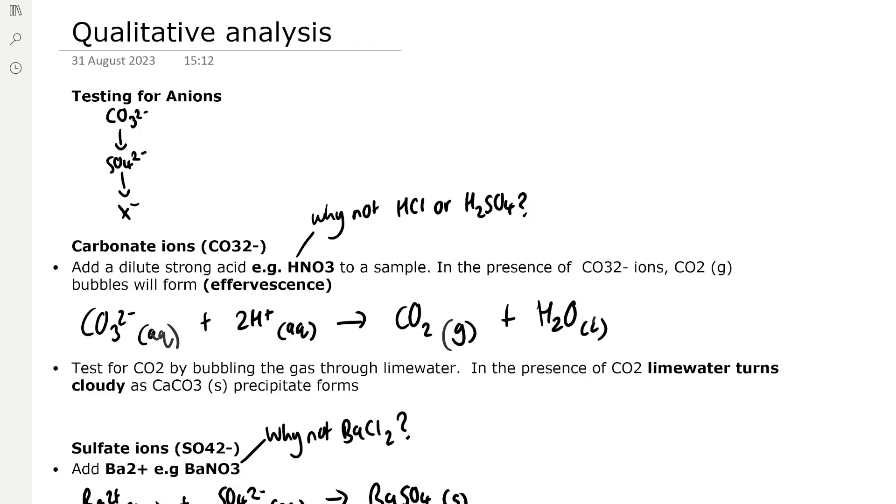We can test for anions. The order that we test for anions is we first test carbonate ions, we then test sulfate ions, and we then test halide ions or X-, and we do it in a specific order for a reason which I'll explain later.